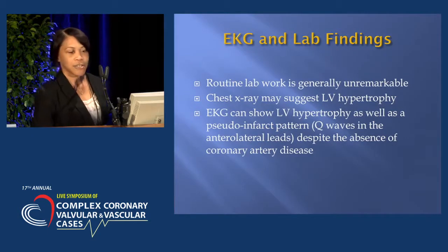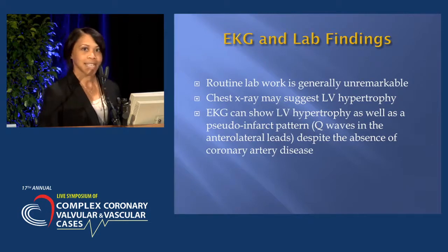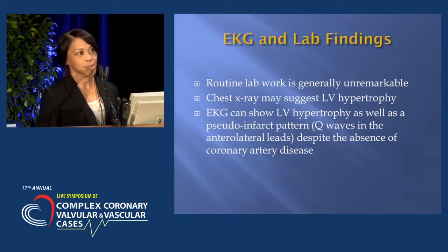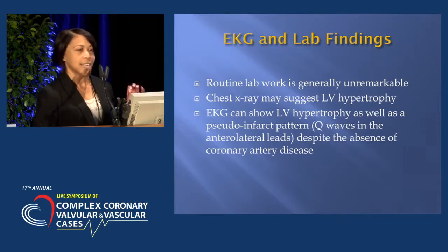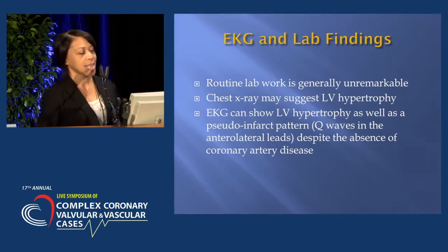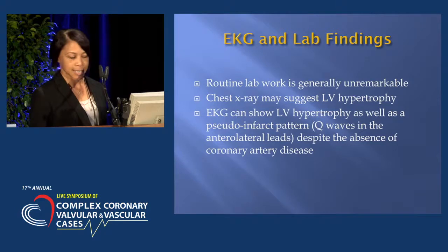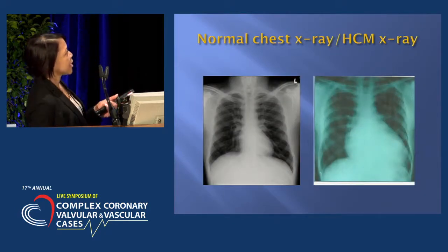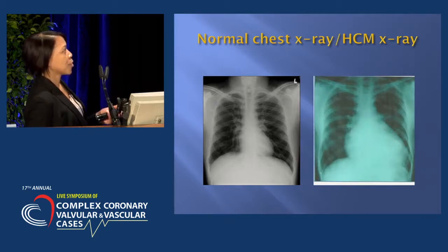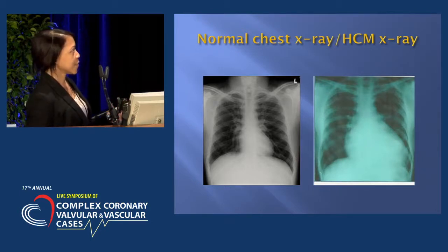Routine lab work is generally normal. Chest x-ray may suggest left ventricular hypertrophy, but may also be normal. The EKG can show left ventricular hypertrophy, as well as a pseudo-infarct pattern, where you have Q waves in the anterolateral leads despite the absence of coronary artery disease. Here on the left is the size of a normal heart, and on the right is a heart with hypertrophic cardiomyopathy — you can see the difference.